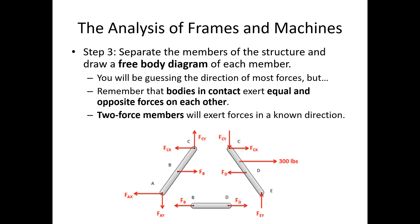We also need to remember that two-force members will exert forces in a known direction. So I've got a pin joint up at the top, so at point C I've got X and Y forces, but my two-force member BD is going to be just in tension or just in compression. So there's no Y component at B or D because this two-force member has to have forces acting along the direction of the member itself.